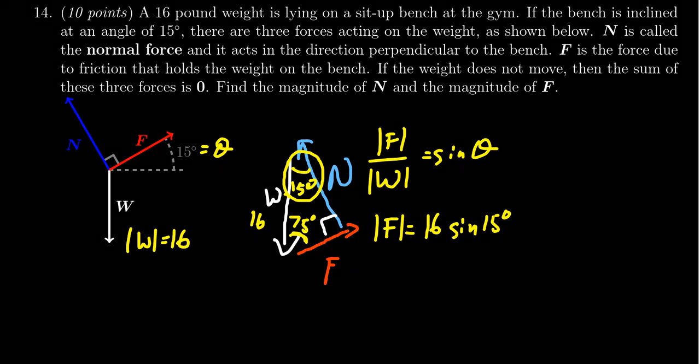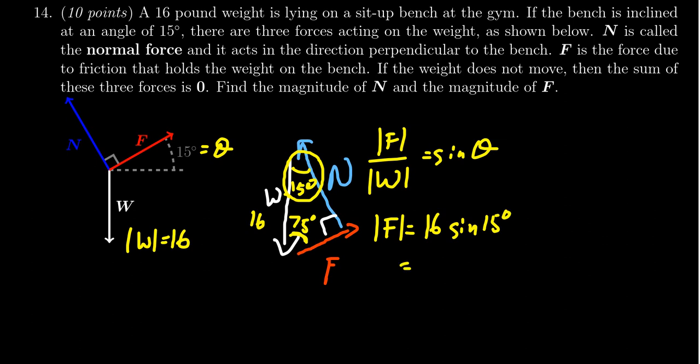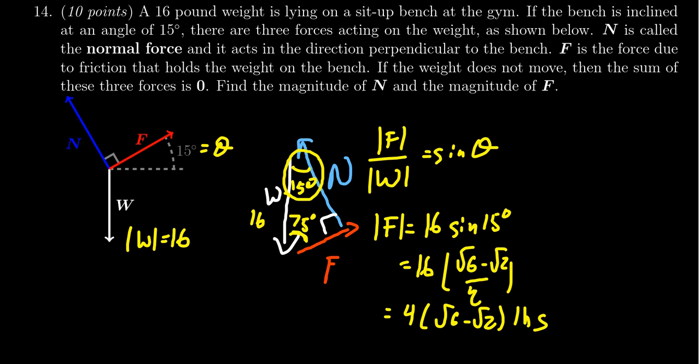We can use our calculator, but sine of 15 degrees has an exact value: (√6 - √2)/4. Since 4 goes into 16 four times, we get F = 4(√6 - √2) pounds. If you want an approximate value, you could use your calculator, but exact answers are perfectly fine.